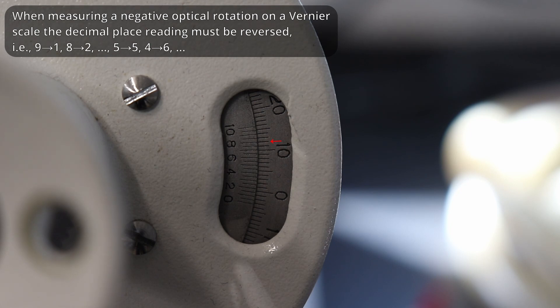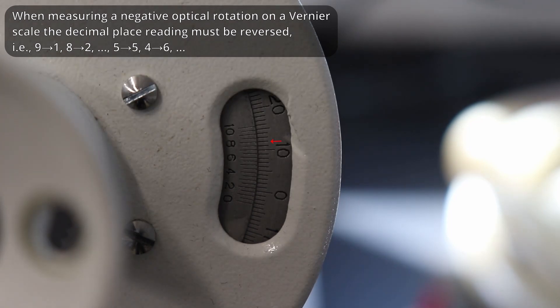However, since we're reading a negative value off the vernier scale, 8 actually becomes 2. And this is the same with the other numbers, so 7 becomes 3, 6 becomes 4, etc.